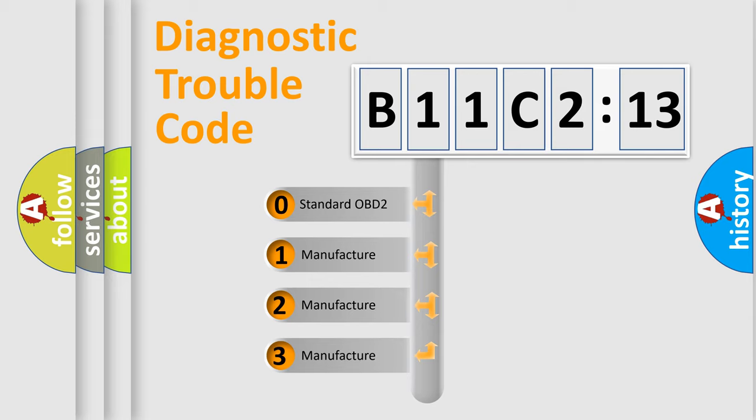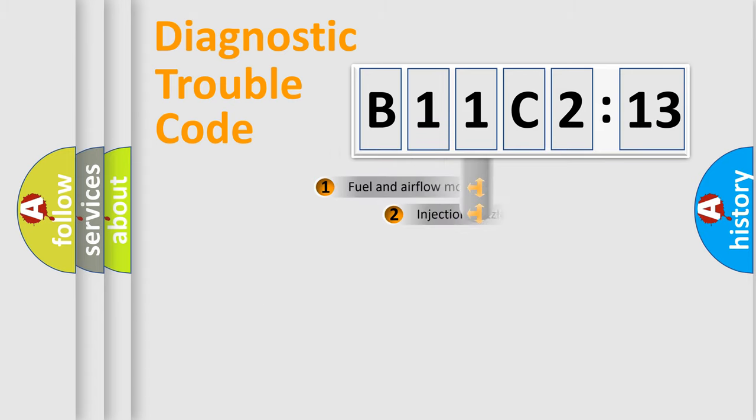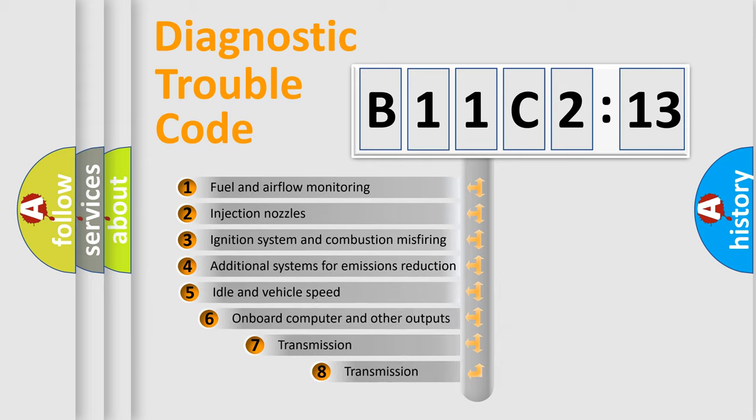If the second character is expressed as zero, it is a standardized error. In the case of numbers 1, 2, 3, it is a more prestigious expression of the car-specific error.